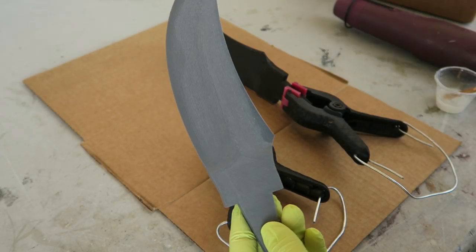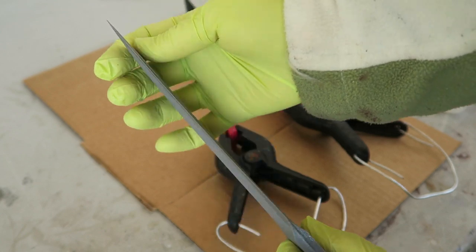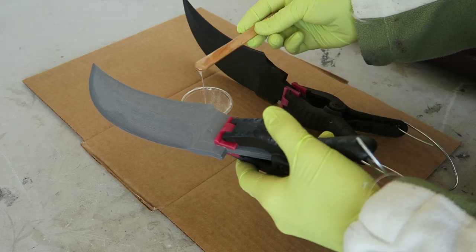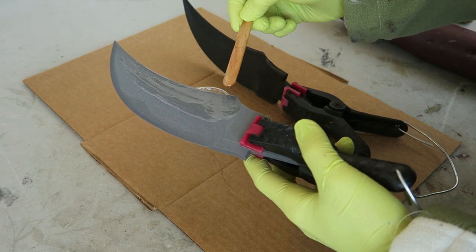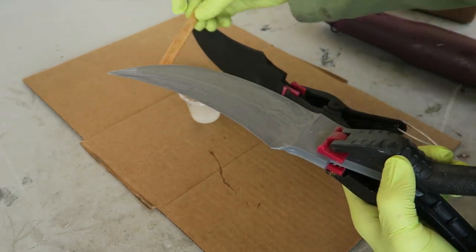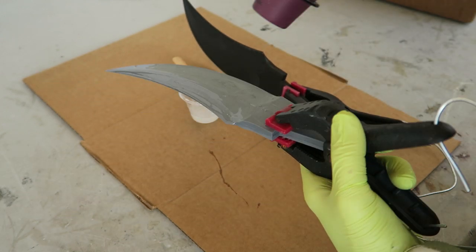Because of the print orientation, the print lines here were more pronounced so that's why on this piece I wanted to use the epoxy. This process also adds some strength to the part and since it is very thin that's a plus. I used the heat gun to remove any bubbles before allowing these to cure.